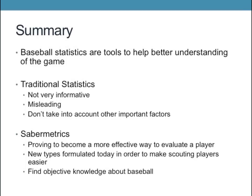To summarize, baseball statistics should be viewed as simply a tool to help understand the game better. Traditional statistics are not very informative when it comes to player evaluation and can be very misleading since they don't take into account other important factors such as opportunities. Should a player with 100 RBIs but 800 at-bats be considered better than a player with only 50 RBIs but only 200 opportunities? That's where sabermetrics comes in — applied statistical analysis to player evaluation. New formulas are constantly being created and improved to make sabermetrics even more accurate, and the ultimate goal of sabermetrics is to find objective knowledge in the game of baseball.